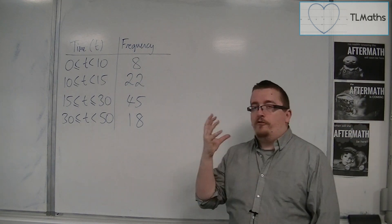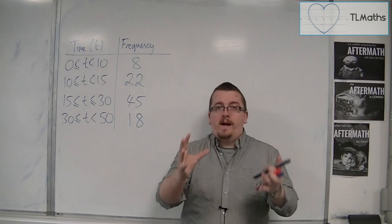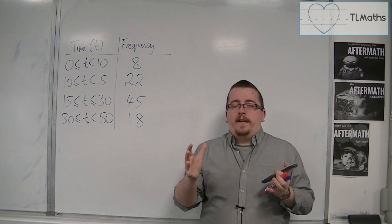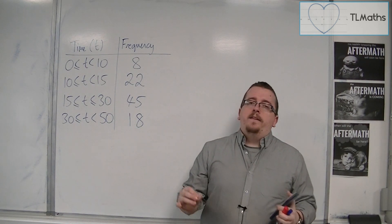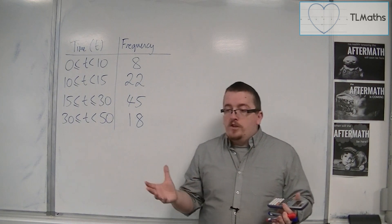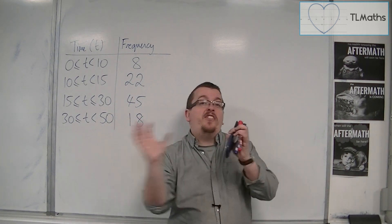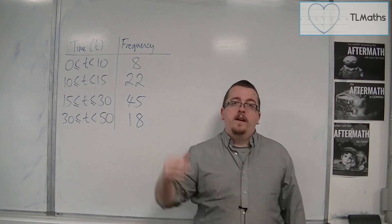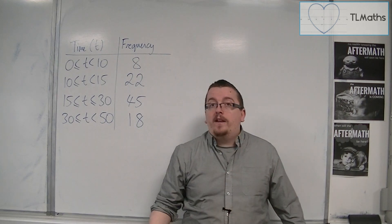But I'm going to go straight from the bare bones basics first. Now, a histogram is effectively a bar chart for continuous data. Now, you'll know what a bar chart is. You might have something like red, yellow, blue. So you've got these separate bars with a height for frequency. And each of the bars are exactly the same width.